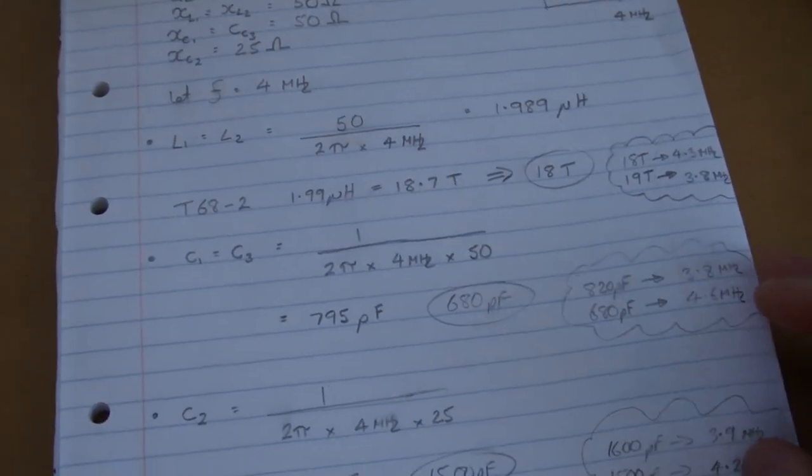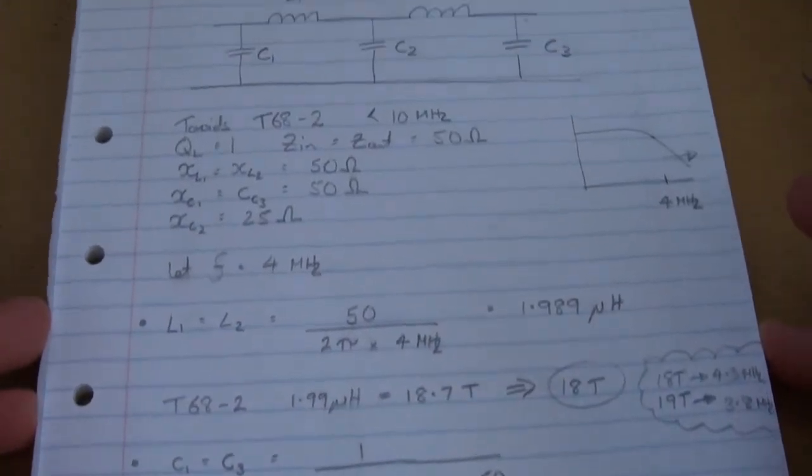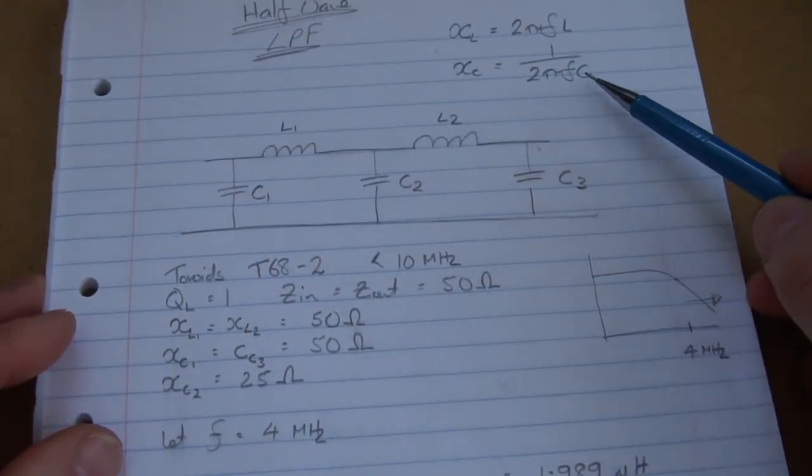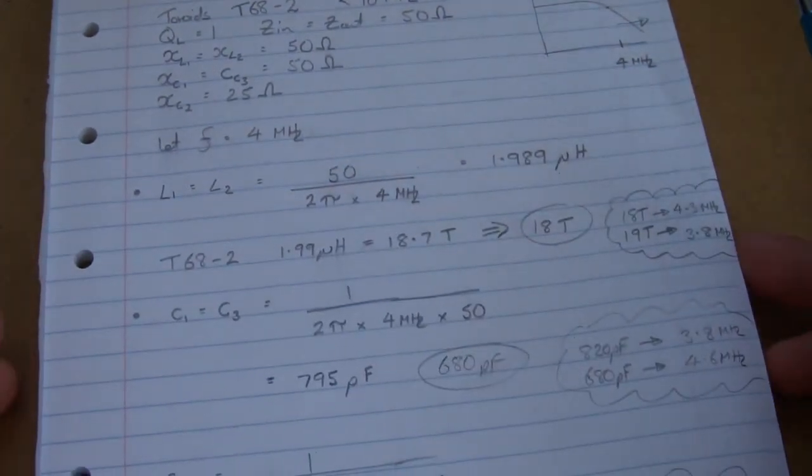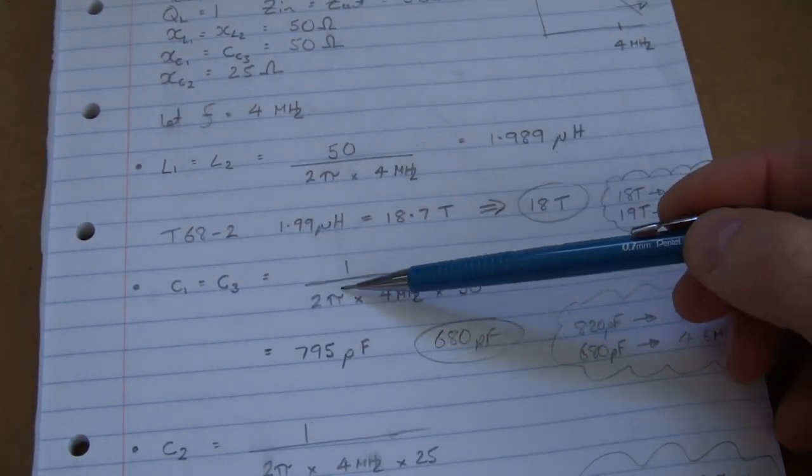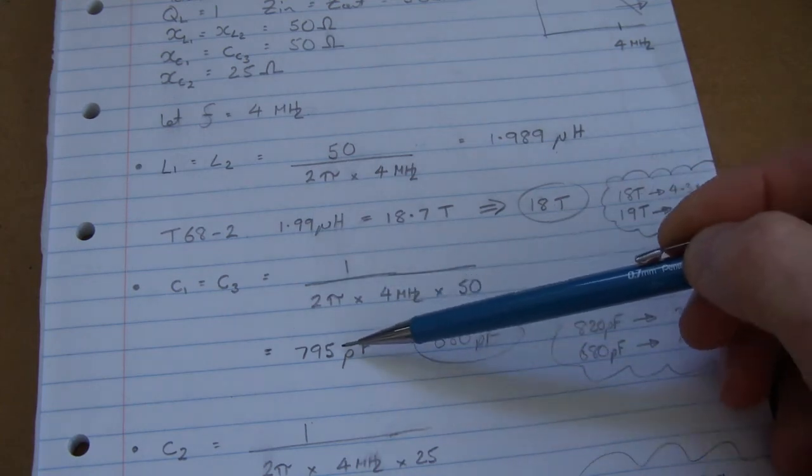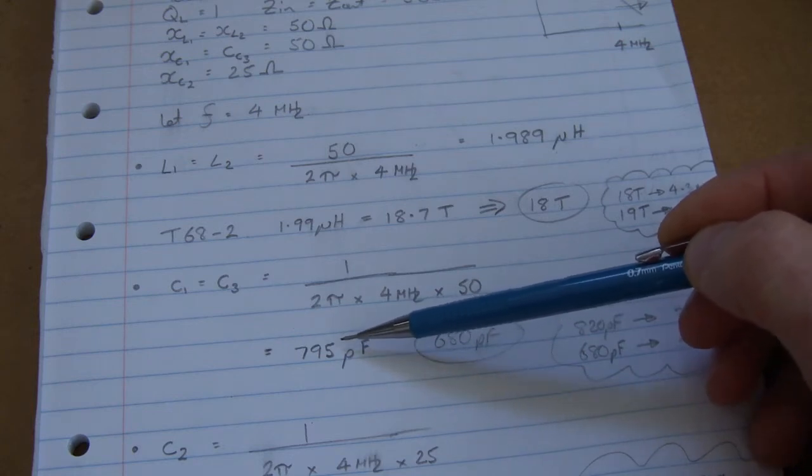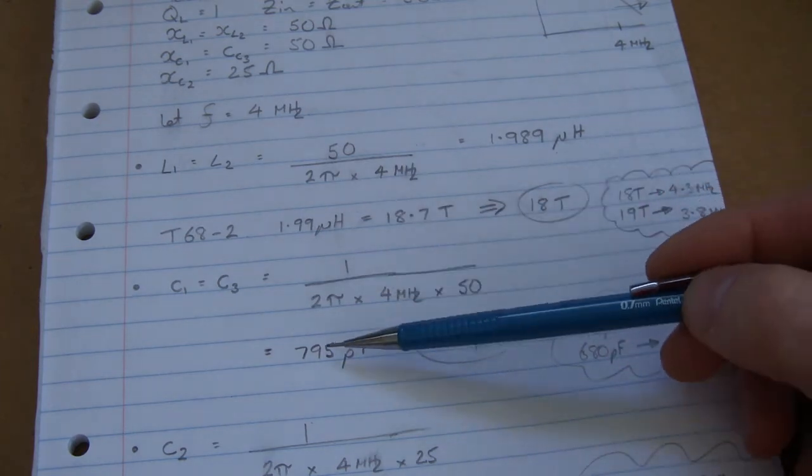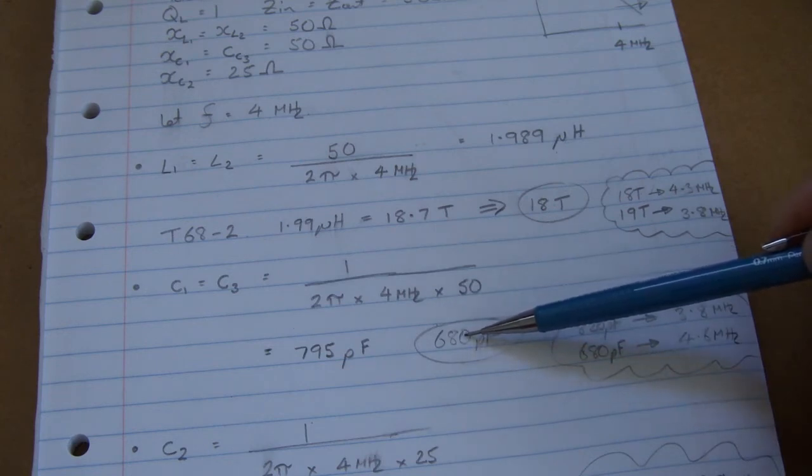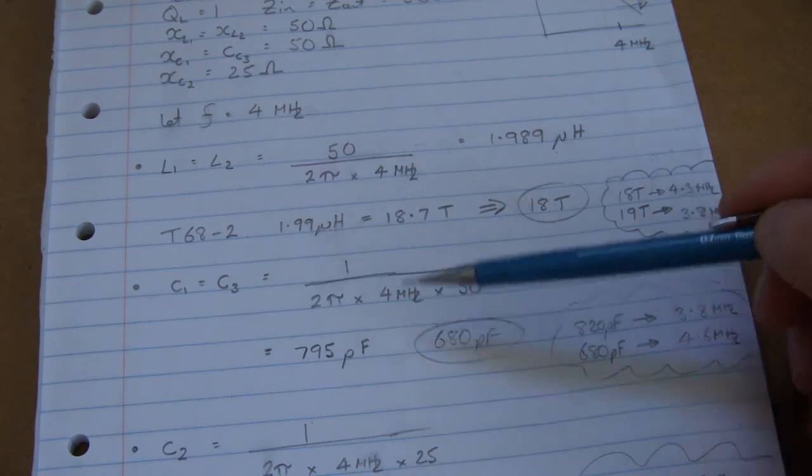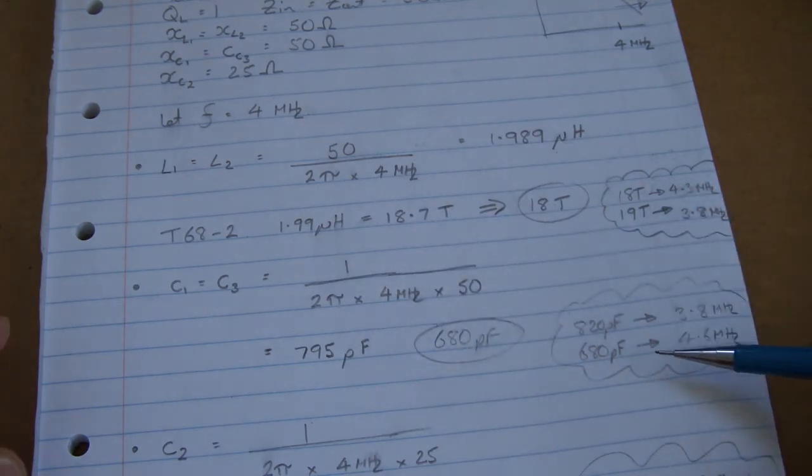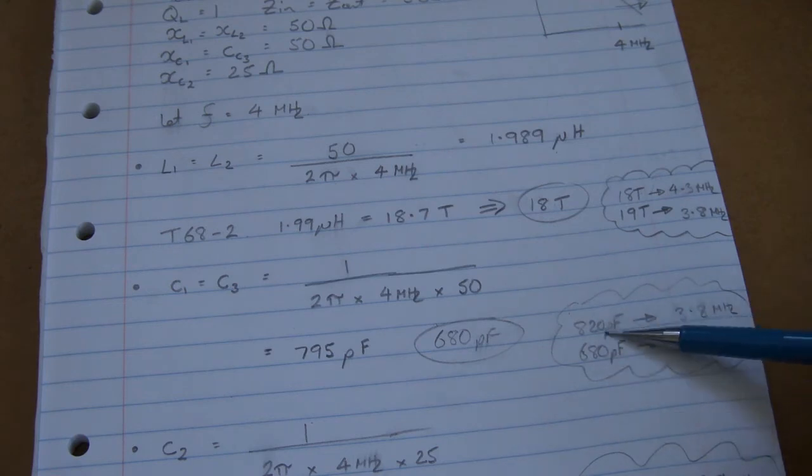Right, so then moving down to C1 and C3, same approach. If we just rearrange this formula here and make capacitance the subject, we can then substitute in 1 over 2 pi, again 4 megs, 50 ohms, comes out 795 picofarads, a non-standard value. If I was being exact, then I could use, say, two capacitors in parallel. I could use, say, a 680 in parallel with a 150 trim capacitor. But what I'm going to do here, I'm just going to keep things simple and just run with standard values.